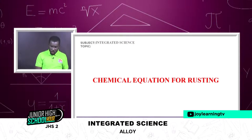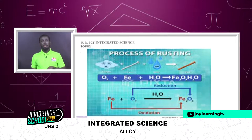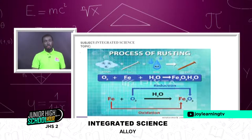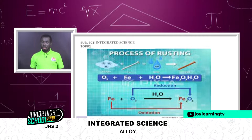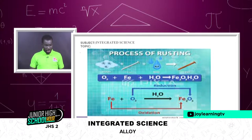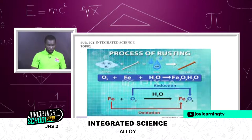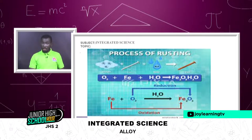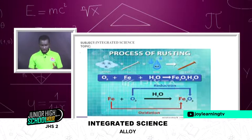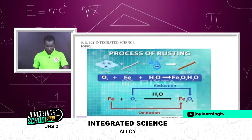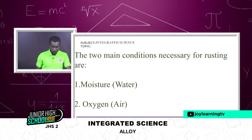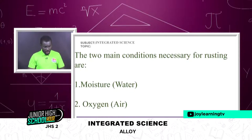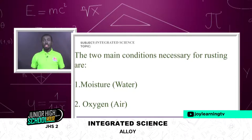For the chemical equation of rusting, three things must always be present: iron (Fe), atmospheric oxygen (O₂), and water. These come together and give us rust. The two main conditions necessary for rusting are moisture (water) and air (oxygen), in the presence of iron.